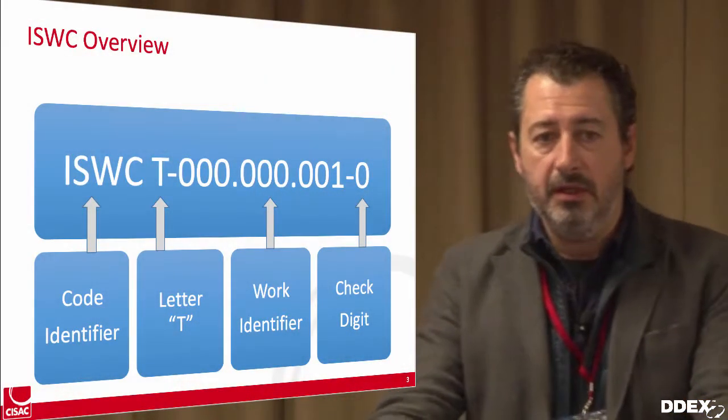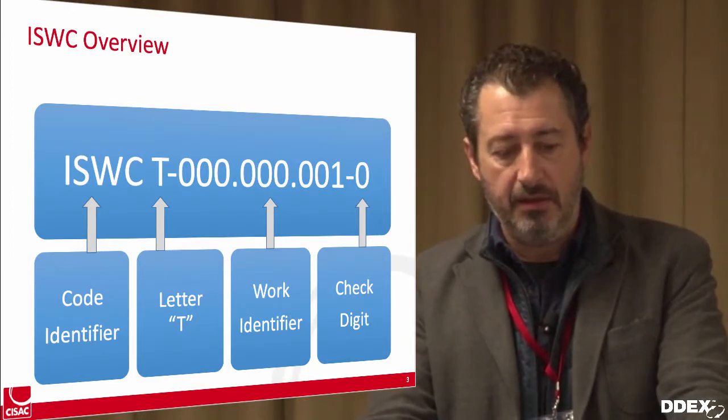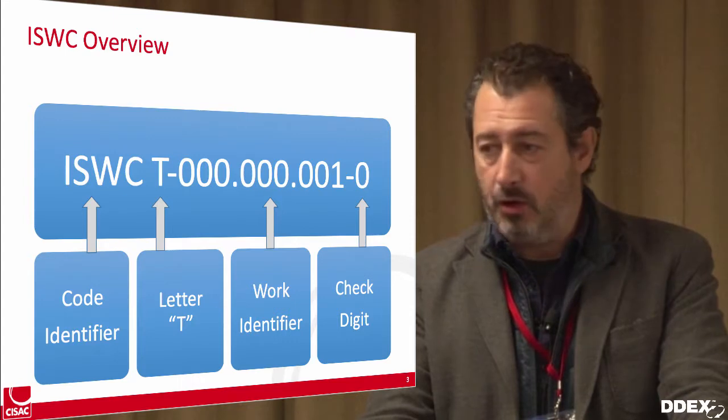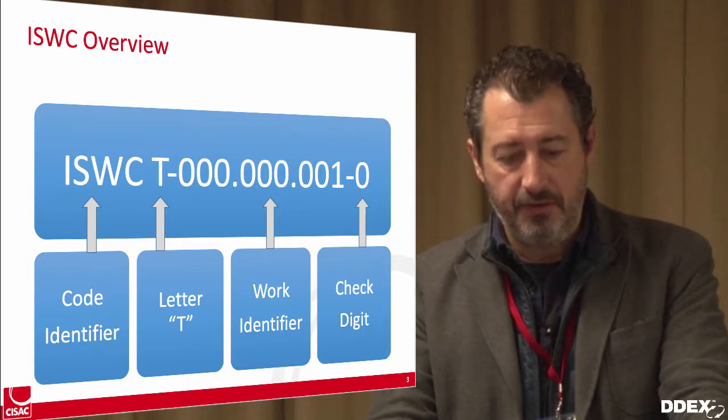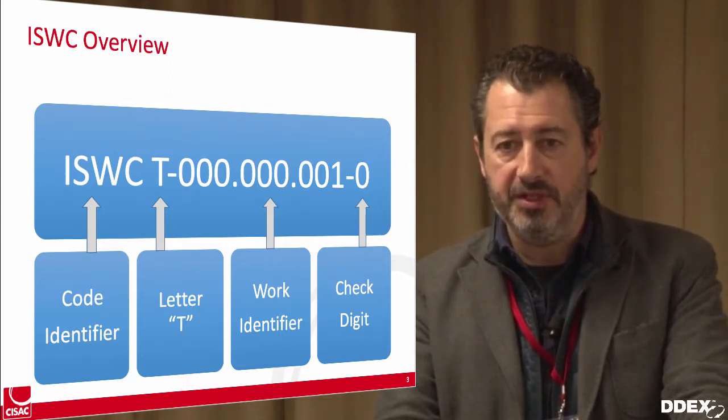There is a lookup service you can check at any time: iswcnet.csac.org. It is a website where you can search by the ISWC and retrieve the related metadata, or you can search by metadata and receive the ISWC. In written form, the ISWC is preceded by the word ISWC, then the letter T, nine digits as the work identifier, and a check digit at the end. It is a very simple structure.